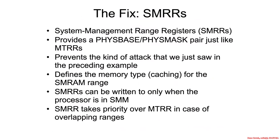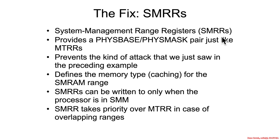The fix for this was that Intel created some other MSRs called System Management Range Registers, SMRRs. They have a PHYSBASE and a PHYSMASK, just like MTRRs. Basically, they are going to override whatever the MTRRs say — they take preference and precedence. The BIOS and SMM can set what they want the caching strategy to be for SMM, and then these SMRRs will take precedence.